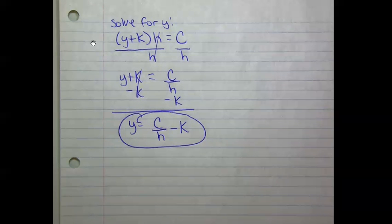Let's solve for y, parentheses, y plus k, end parentheses, times h equals c. So the first thing I need to do to try to get y by itself is divide both sides by h.